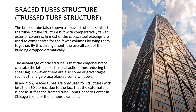Another type of tube structure is the braced tube, or truss tube structure. The braced tube is similar to the tube-in-tube structure but with comparatively fewer exterior columns. Steel bracings are used to compensate for the fewer columns by tying them together, dramatically reducing the overall cost. The advantage is that the diagonal brace can take lateral load in axial action, thus reducing shear lag. Disadvantages include large braces blocking windows, and braced tubes are only suitable for structures with fewer than 60 stories, as the external shell is not as stiff as the frame tube. The John Hancock Center in Chicago is a famous example.